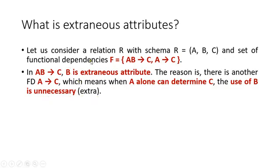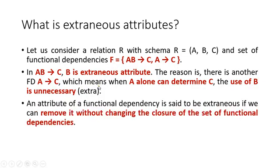So we can say that B is an extraneous attribute in the given functional dependency. By definition, an attribute of a functional dependency is said to be extraneous if we can remove it without changing the closure of the set of functional dependencies. If we remove B without changing any set of functional dependencies, it does not make any difference — A determines C is still there. So removing B from AB determines C causes no change, which is what we mean by extraneous attribute.